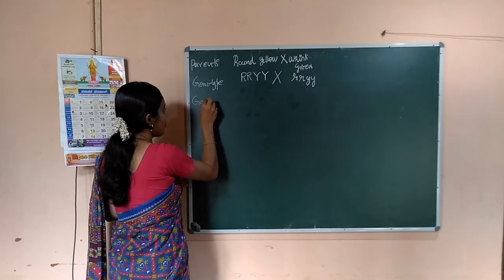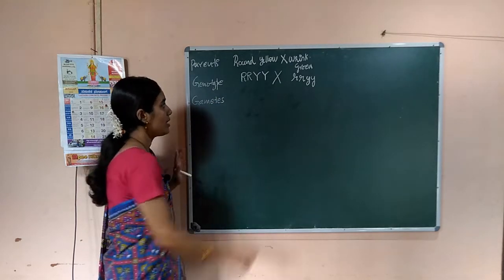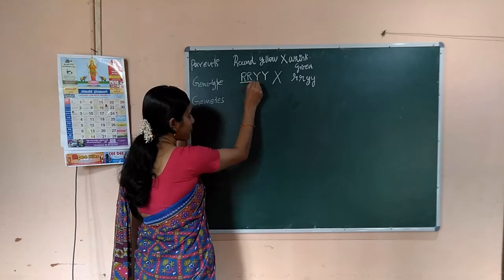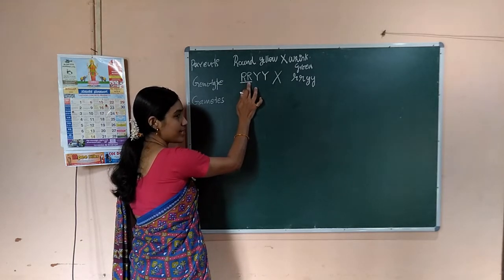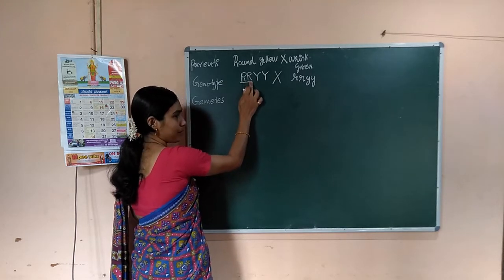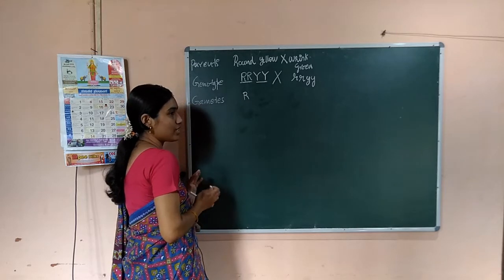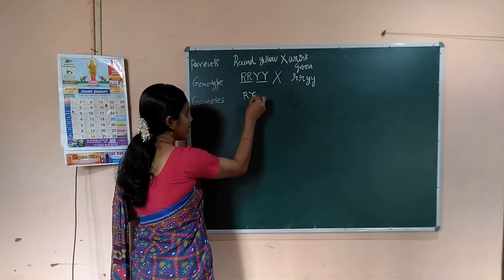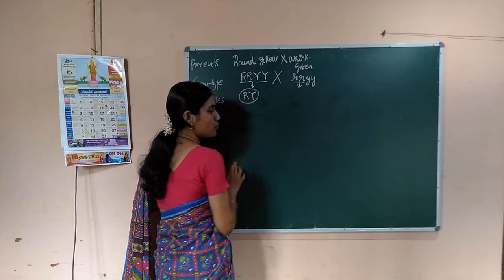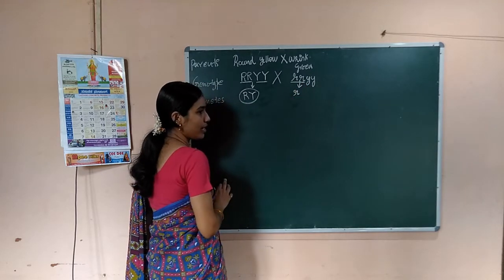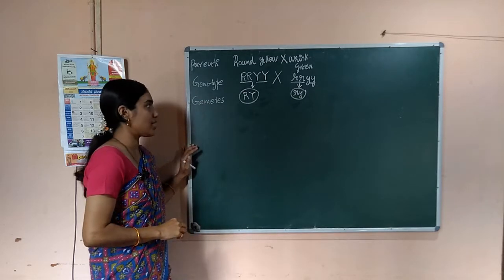Be careful when writing gametes in dihybrid cross. Since the round yellow parent is RRYY — both genes for each character are the same — you write one gene out of two. So the gamete from RRYY is RY. Similarly, from rryy, one r and one y go to the gamete, giving ry.